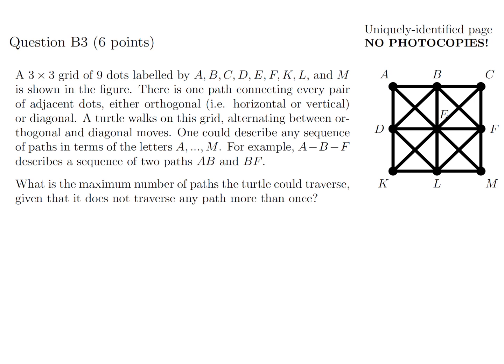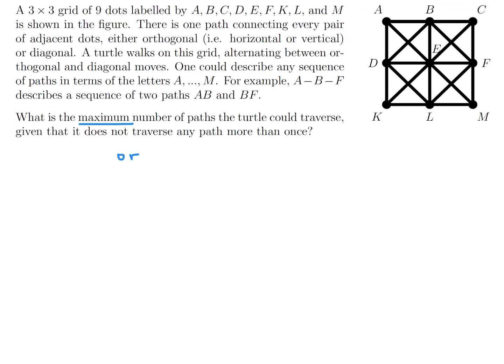Consider a 3×3 grid with 9 dots labeled A through M. A turtle walks along this grid alternating between orthogonal and diagonal moves, not traversing any path more than once. Let's split the paths into diagonal and orthogonal. There are 8 diagonal paths and 12 orthogonal paths.